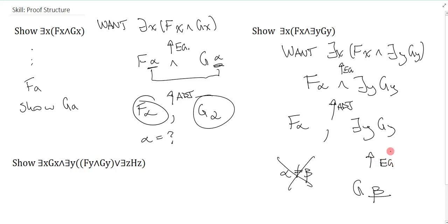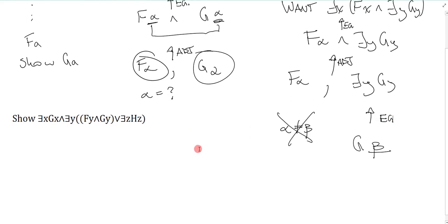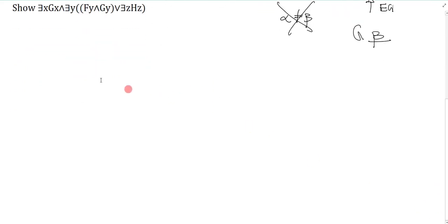So that's how you do proof structure in this case. So here's a final slightly more busy example. So we'll just go through it. Show this big thing. Okay, I'm not going to write my first want here. I'm just going to pretend that I can break this down immediately. So because this is a conjunction, I know that I want exists x G x, and I also need this exists y bracket bracket F y and G y, or there exists a z H z.